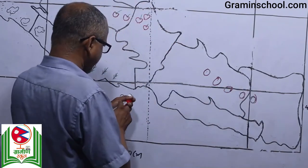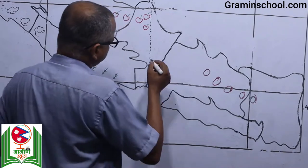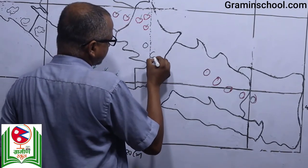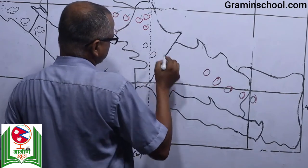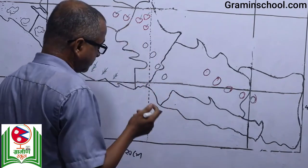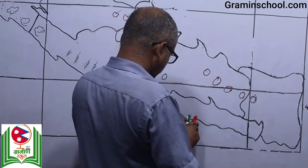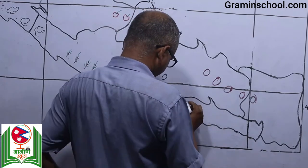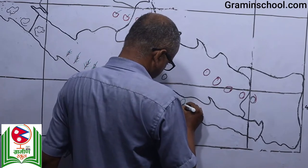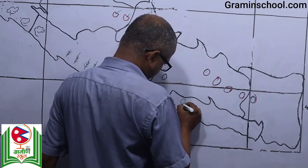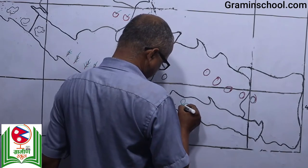This is the orange cultivation area. Make it orange — if orange is in your color set, use that. Round it out like this — this is the orange cultivation area.